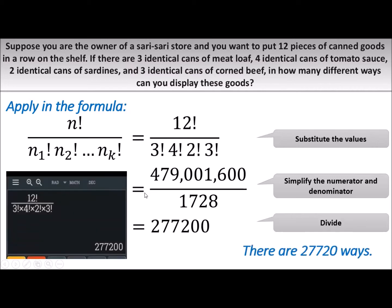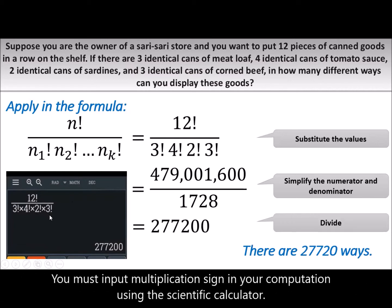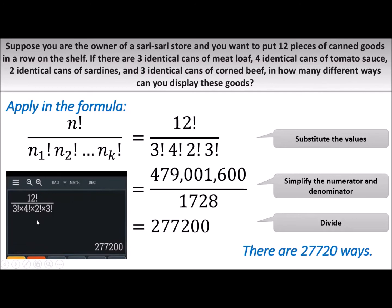If we're going to use a calculator, just input like this. Pakihinap yung fraction symbol sa calculator, then pakiinput yung 12 factorial on the numerator, and then yung sa denominator, you should input multiplication signs para hindi mag-error — because some calculators are quite sensitive on the symbols to be used.